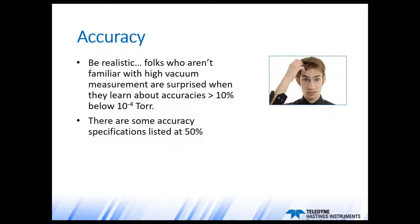One other thing about accuracy: some metrology managers are very surprised when they find out that a gauge has an accuracy specification of 10% of reading or higher. Vacuum gauges, especially high vacuum gauges, are not like micrometers or electrical meters. I've seen some accuracy specifications for vacuum gauges listed as high as 50% of reading. So be realistic about the spec that you're asking for.